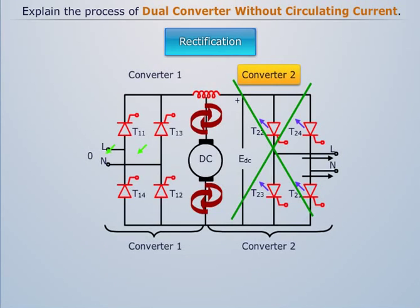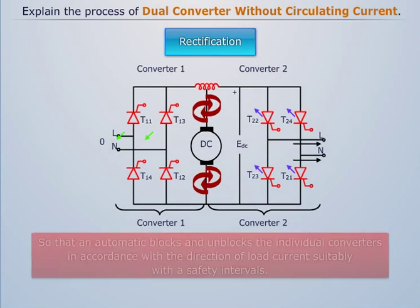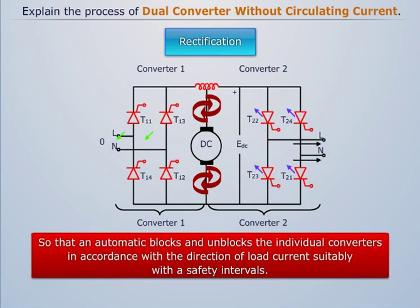If the converter 2 is triggered before the converter 1 has been completely turned off, a large circulating current will flow between the two converters. Thus, from the above discussion, it becomes clear that such a mode of operation requires sophisticated control system, so that automatic blocks and unblocks the individual converters in accordance with the direction of load current suitably with a safety interval.